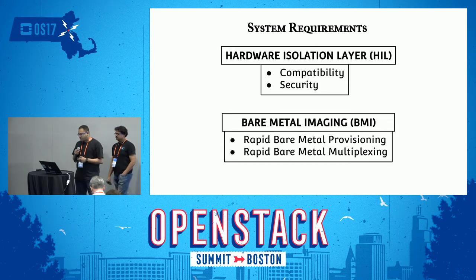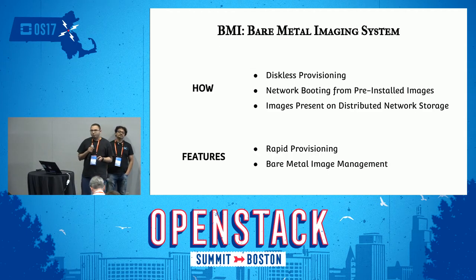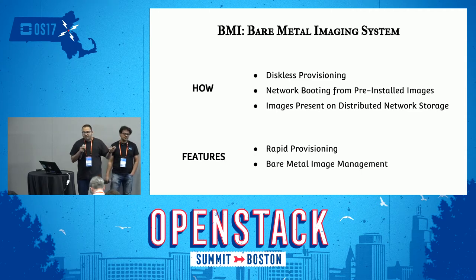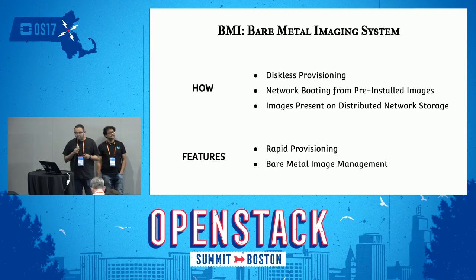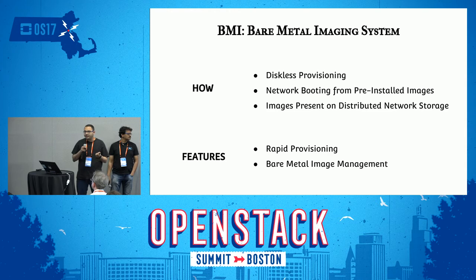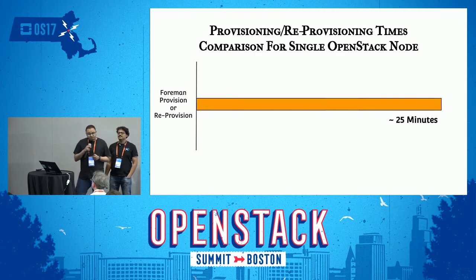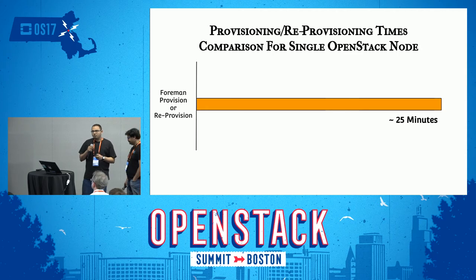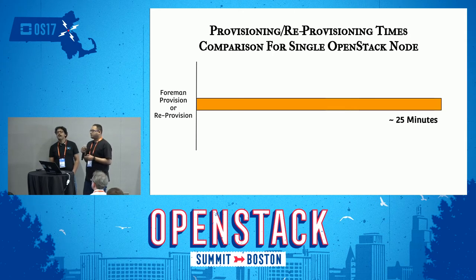We developed our own provisioning system called BMI — Bare Metal Imaging System. BMI is a rapid provisioning and image management system that lets you provision on-demand bare metal clusters within less than six to seven minutes. BMI is based on diskless provisioning where a node boots up from a pre-installed image that resides on a really fast storage system, containing your operating system, any intended applications, and OpenStack in this case. Using BMI, we were able to achieve up to five times improvement in provisioning speed.